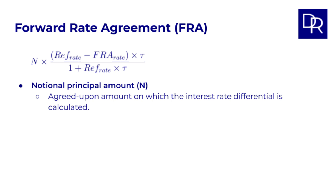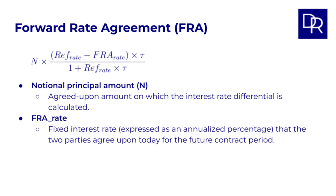First, N, which is the notional principle amount. This is the agreed upon amount on which the interest rate differential is calculated. Second, the agreed FRA rate. This is the fixed interest rate, expressed as an annualized percentage, that the two parties agree upon today for the future contract period. This is the rate we see in the numerator, being compared to the reference rate.